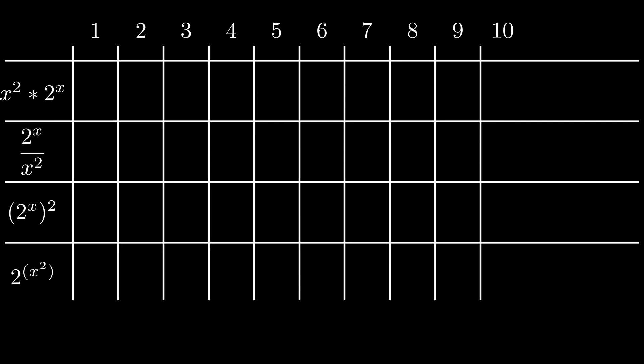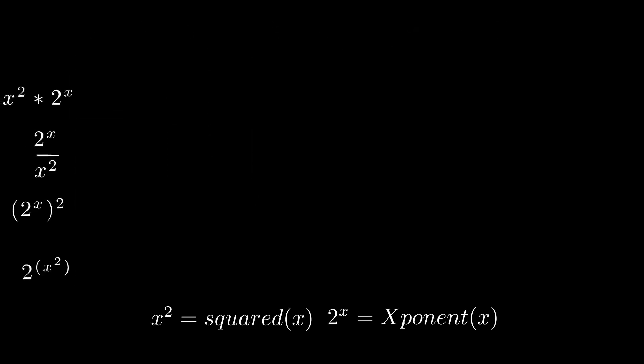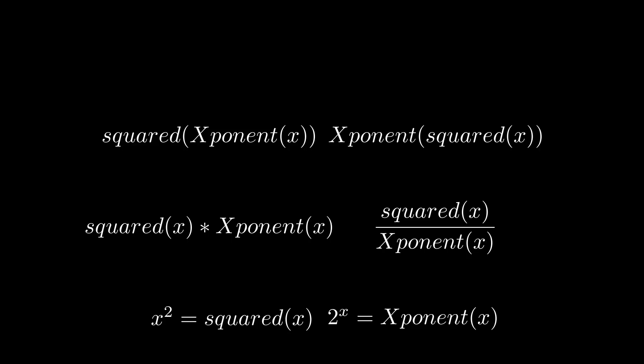So here's an idea. How about we say that x squared would be equal to a function called squared, and 2 to the x would be equal to a function called exponent. Well then we can write it like this. And given that, you know, this might be a lot, let's just change it to single letters, like so.